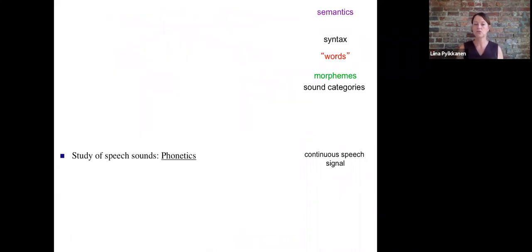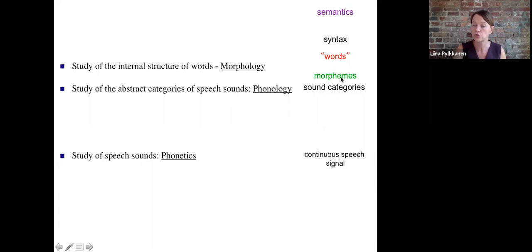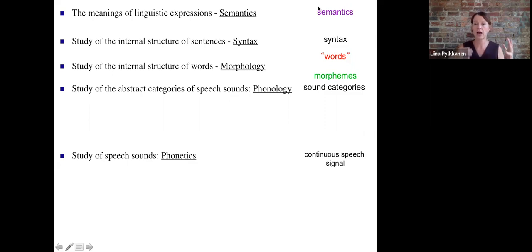So all these different levels of representation correspond to different subfields of linguistics that study these levels. So when we're interested in that continuous speech signal, we're doing phonetics. When we're talking about sounds at this kind of categorical level, we're talking about phonology—it's the study of sound systems of languages. When we're studying the internal structure of words, that's morphology. When we're talking about or studying the structure of sentences and the structure of linguistic expressions at the sentence level, that's syntax. And then when we're understanding how the compositional semantic interpretation comes about, that is what we study in what's called formal semantics.